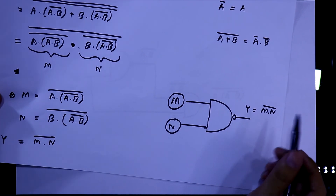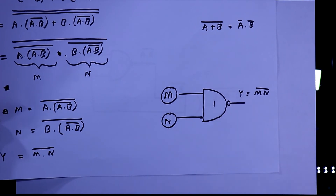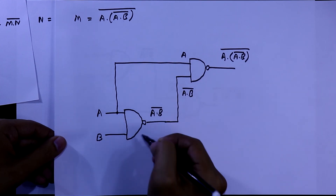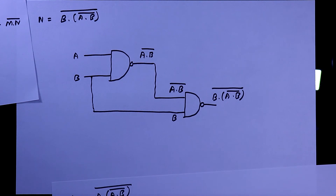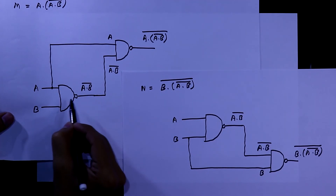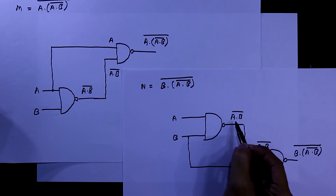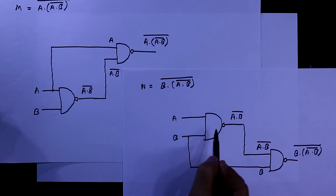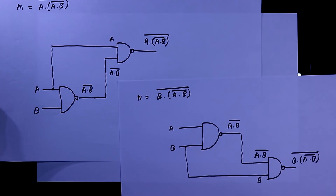From this we can see we need five NAND gates — one final gate, two for M, and two for N. But we notice that two NAND gates (one in M and one in N) have the same output A dot B-bar. So we can share that one NAND gate, reducing the total to four NAND gates.